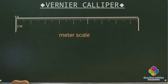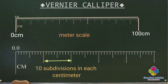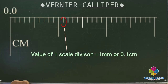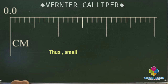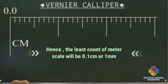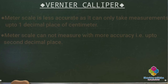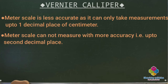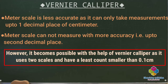Another example: our meter scale has its zero mark at one end and the 100 centimeter mark at the other end. It has 10 subdivisions in each one centimeter length, so the value of one scale division is 1 millimeter or 0.1 centimeter. Thus the smallest measurement that can be done accurately using a meter scale is 1 millimeter or 0.1 centimeter — that is, up to one decimal place of a centimeter. It cannot measure length with more accuracy, that is up to the second decimal place. However, this becomes possible with the help of vernier caliper, which uses two scales and has a least count smaller than 0.1 centimeter. Smaller the least count, higher will be the accuracy of that measuring instrument.